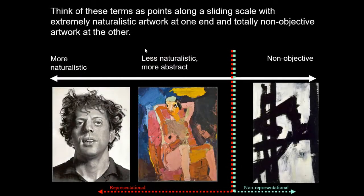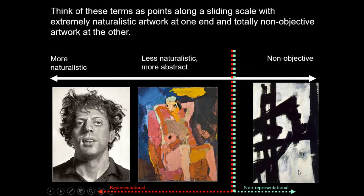If you look at these artworks all together and think of it like a sliding scale or spectrum, most of the art we're going to look at will fall on the representational side — it represents something from the real world. Further left is more naturalistic, less abstract. Further toward the right is less naturalistic, more abstract. But once you cross a certain borderline, you're really in the realm of artwork that has no subject and is non-objective.